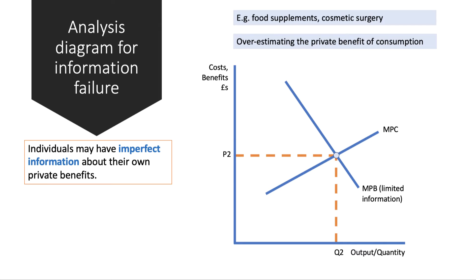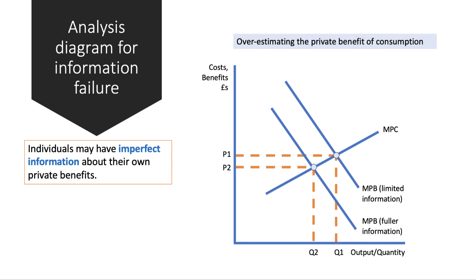If they had better, fuller information, then the demand curve for the product would be to the left of where it sits with limited information. In that case, they'd be less willing and able to buy the product, and the quantity would go from Q1 to Q2 at a lower price. The key policy response would be to provide consumers with better labelling and more accurate information about the consequences or benefits of consumption.